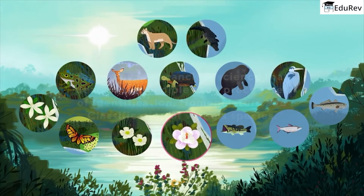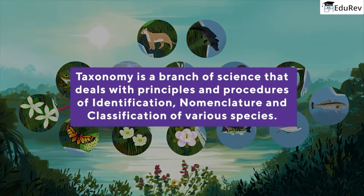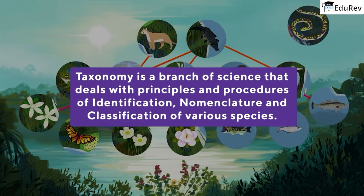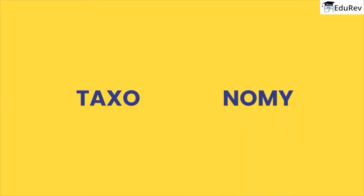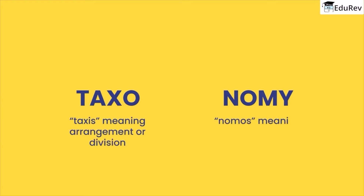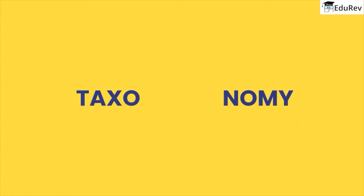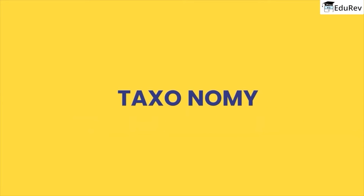According to what we understand from that man's observation, taxonomy is a branch of science that deals with principles and procedures of identification, nomenclature, and classification. The word taxonomy is derived from a Greek word, 'taxis', meaning arrangement or division, and 'nomos', meaning method — that is, the method of arranging organisms into groups according to their characteristics.